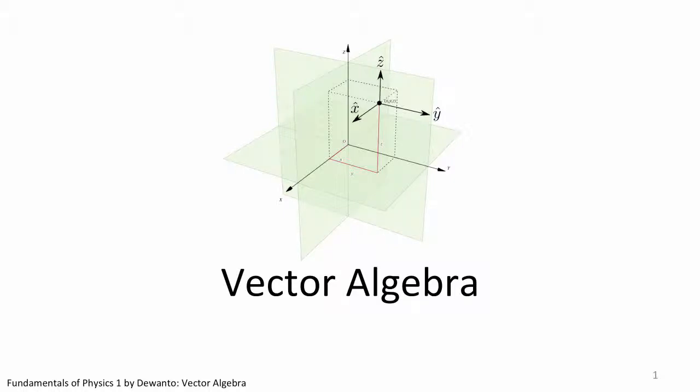We learned previously that a vector is a quantity which carries both magnitude and direction. Physical examples of vectors include velocity, acceleration, force, and momentum. These are quantities we are going to learn at a later stage. But before we go to those topics, let us learn some basic vector algebra.